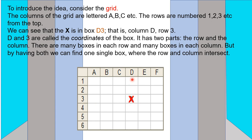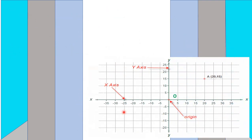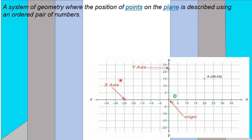Here, D and 3 are both called the coordinates of this particular box — the first part is the column and the second is the row. In this grid, each box has a unique value for its position. A system of geometry where the position of points on a plane is described using an ordered pair of numbers is known as Coordinate Geometry.